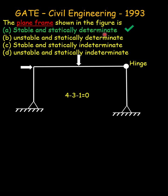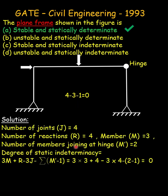So the correct option is A. The same thing can also be obtained by using the more generalized formula for complex structures, in which 3M + R - 3J - Σ(M') - 1 is the formula. If you substitute all these values in this equation, you get again zero, which makes the structure stable and statically determinate.